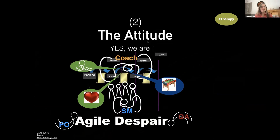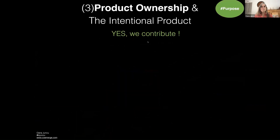The third state — and it's the one I'm really working to put in place — is the purpose-centric state, which is the shared product ownership, creating an intentional product. We build something together with intention. This is what I call the purpose phase. It goes from 'yes, we do' — the Agile Ghetto — to 'yes, we are' — the therapy state — to the purpose state, which is 'yes, we contribute.' We contribute to something that is bigger.